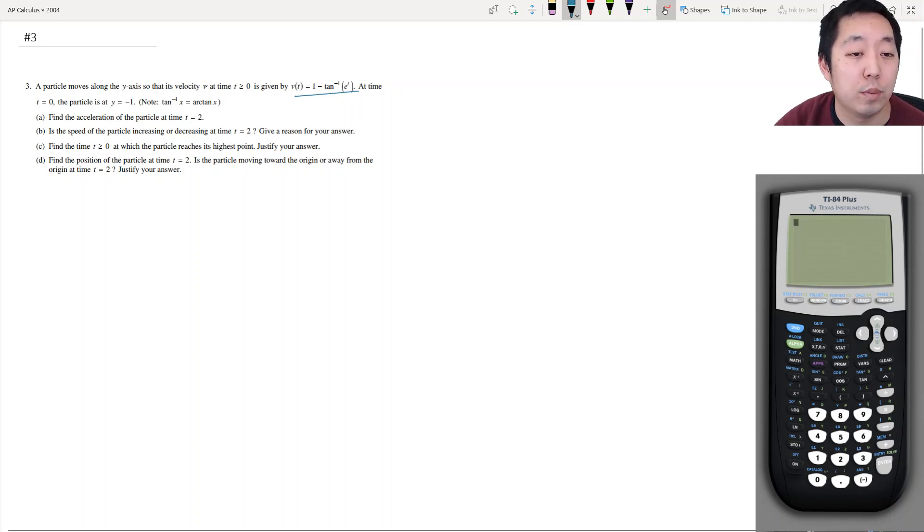Find the acceleration of the particle. Okay, acceleration is always the derivative, so a of t is equal to v prime of t, the derivative of v with respect to t. Derivative of 1 is 0. I see you could just plug this in your calculator I guess. I'm going to just analytically do it and then we'll use our calculator.